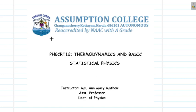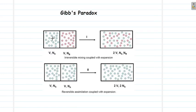Hello students. In today's class let us learn about the Gibbs paradox. In this paradox we actually come across a situation where the Boltzmann relation and the entropy equation that we get from that relation actually contradicts the real observations that we make.